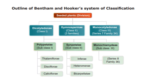Summary outline of Bentham and Hooker's classification: seeded plants are divided into three classes — Dicotyledon (Class 1), Gymnosperm (Class 2, three families), and Monocotyledon (Class 3, series 7, family 34). Dicotyledon is further divided into three subclasses: Polypetalae (Subclass 1, with divisions Thalamiflorae, Disciflorae, Calyciflorae), Sympetalae (Subclass 2), and Monochlamydae (Subclass 3, series 8, family 36).